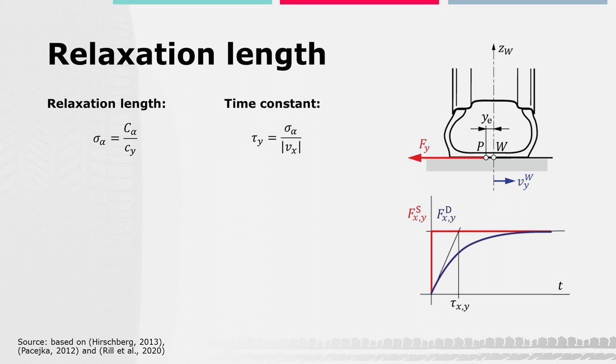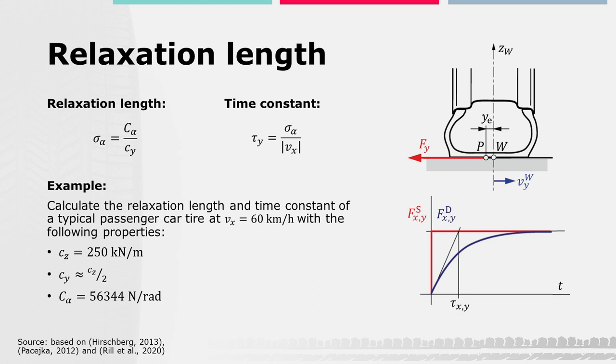The relaxation length contains the physical properties of a tire that have the most significant influence on transient force transmission. This is the steady-state force characteristic described by the cornering stiffness, as well as the mechanical stiffness described by the lateral spring stiffness. To get a feeling for typical values, let's consider a typical passenger car tire at a constant vertical load with a given cornering stiffness traveling at 60 km/h. A typical value for the vertical stiffness is 250 kN/m, and we can roughly assume the lateral stiffness Cy is approximately half of the vertical stiffness Cz. Try to determine the lateral relaxation length σα as well as the time constant τy at the given traveling velocity.